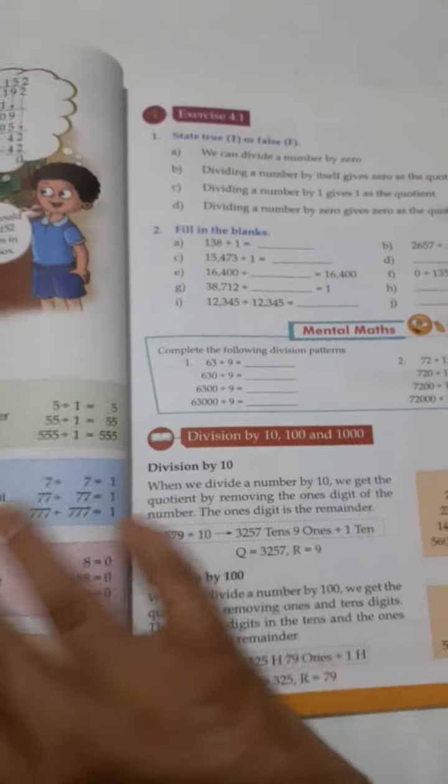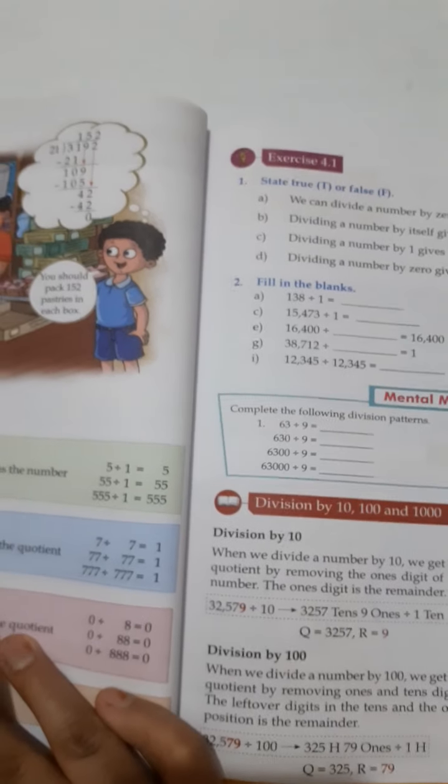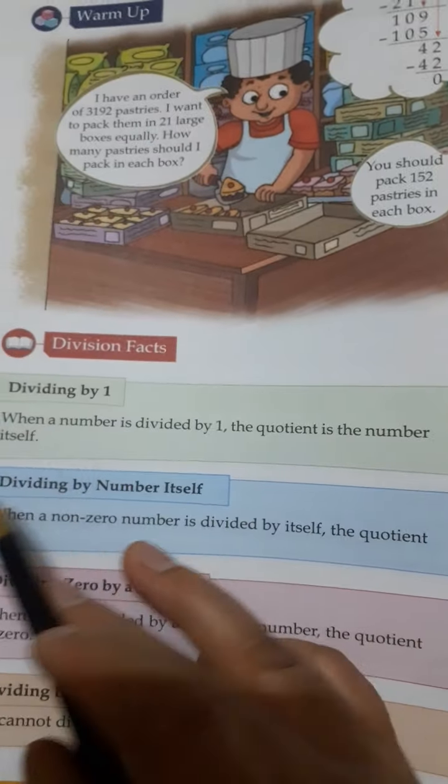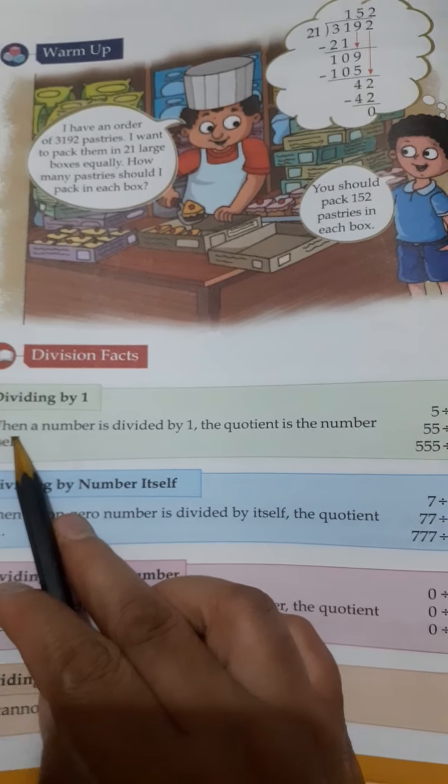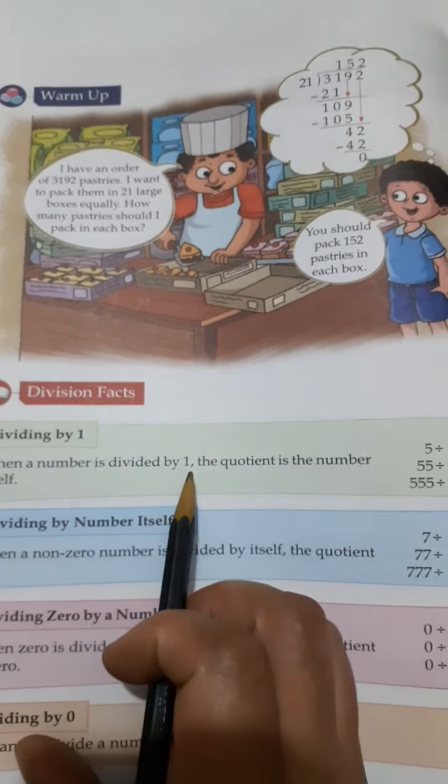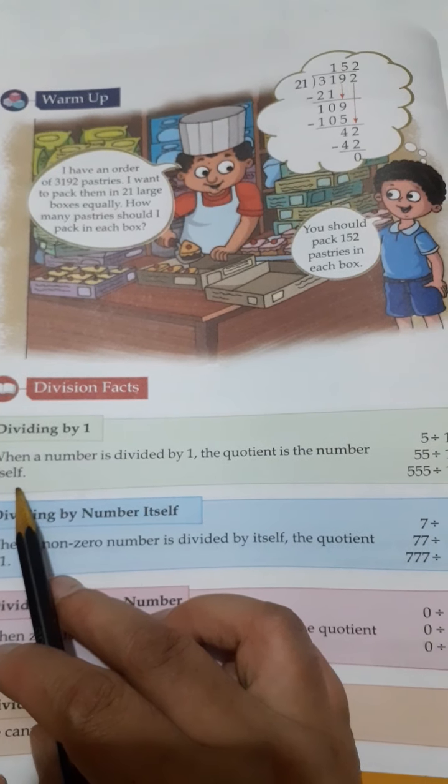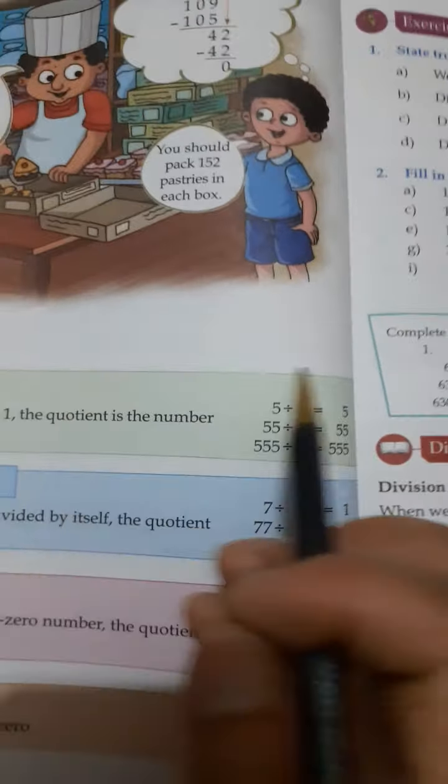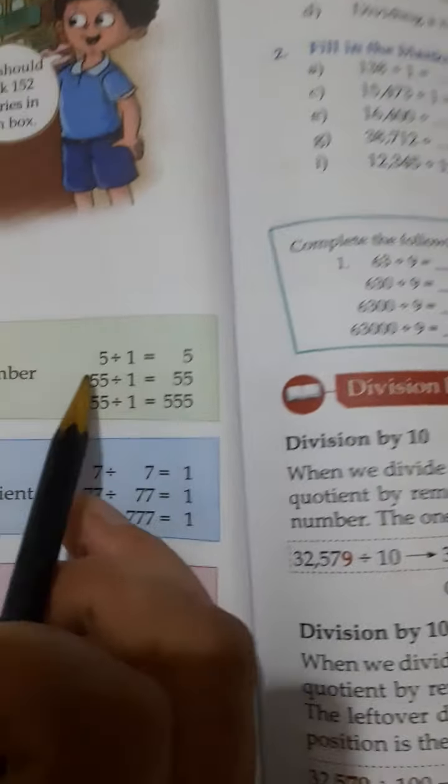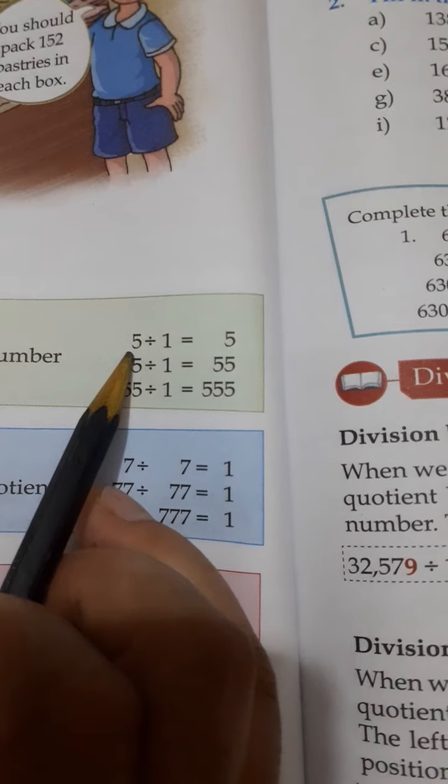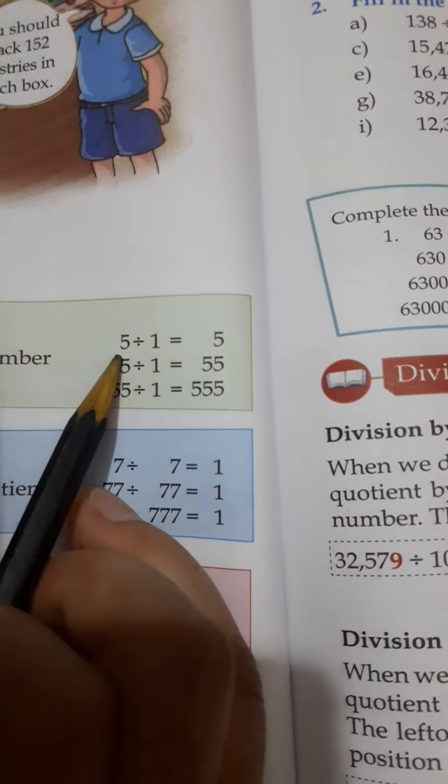Move forward, we have to just have a look on the facts, division facts. What division facts says? When a number is divided by 1, the quotient is the number itself. When you are dividing any number by 1, you got the same number. Let's suppose, look at here in the example. This number 5 is divided by 1. So we get the 5.